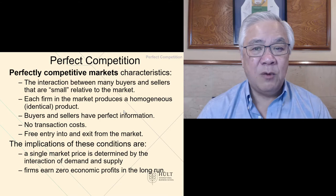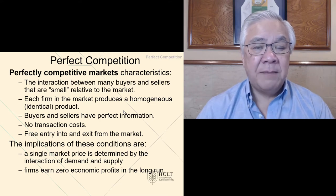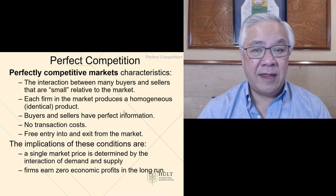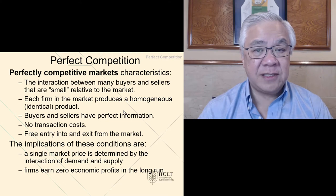Each firm in the market has a homogeneous, identical product. Think of this as a pure commodity with no differentiation. Buyers and sellers have perfect information, so you can't trade on that or take advantage from that.